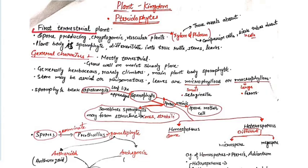The pteridophyte is the first terrestrial plant. It is called the amphibian of the plant kingdom — a plant that can survive on both land and water. Pteridophytes are spore-producing plants, so reproduction occurs through spores.